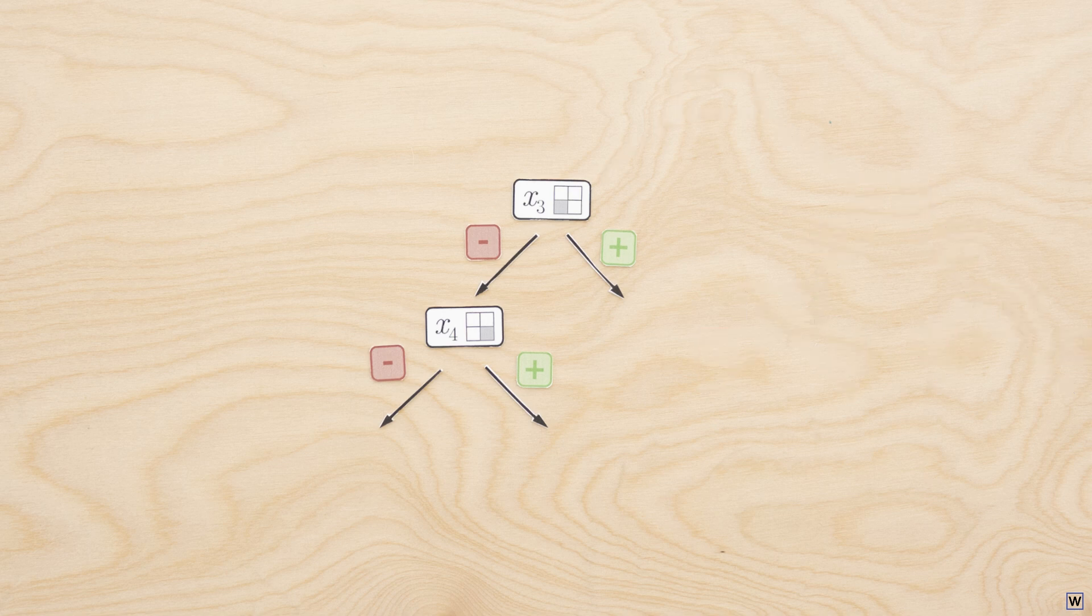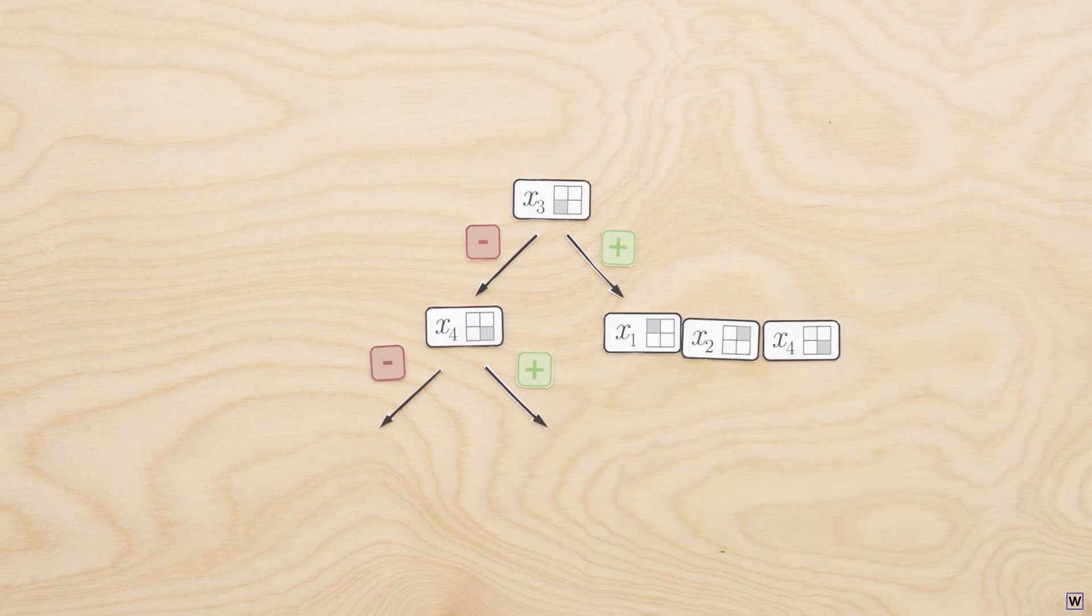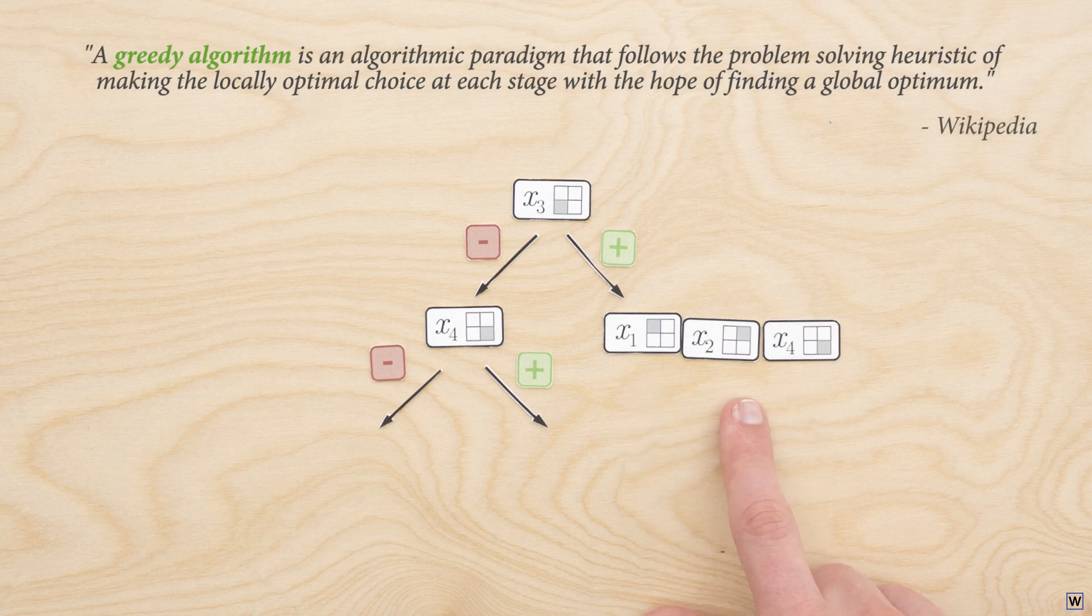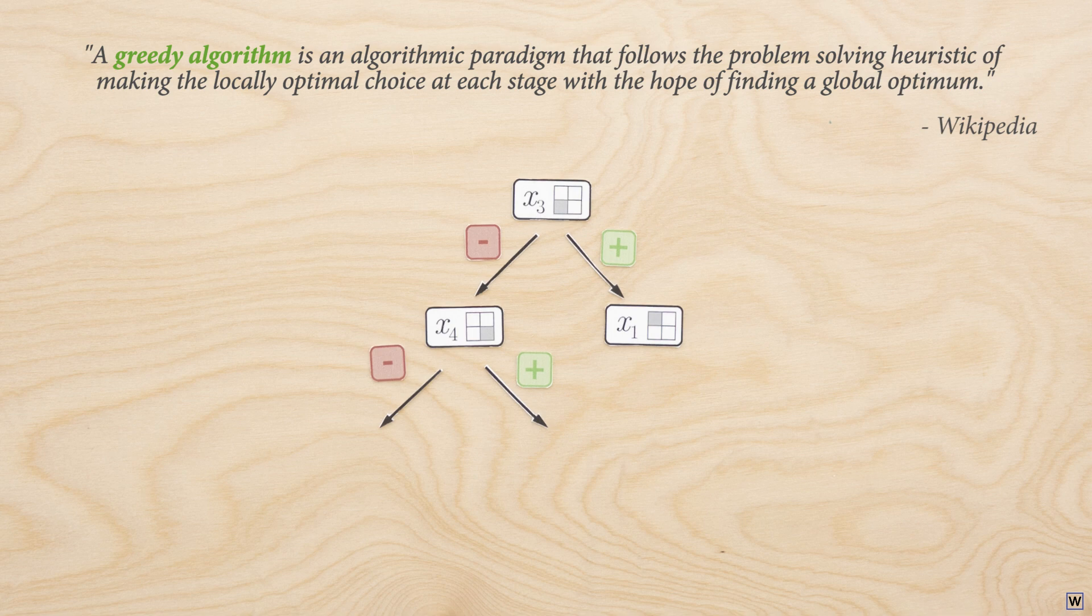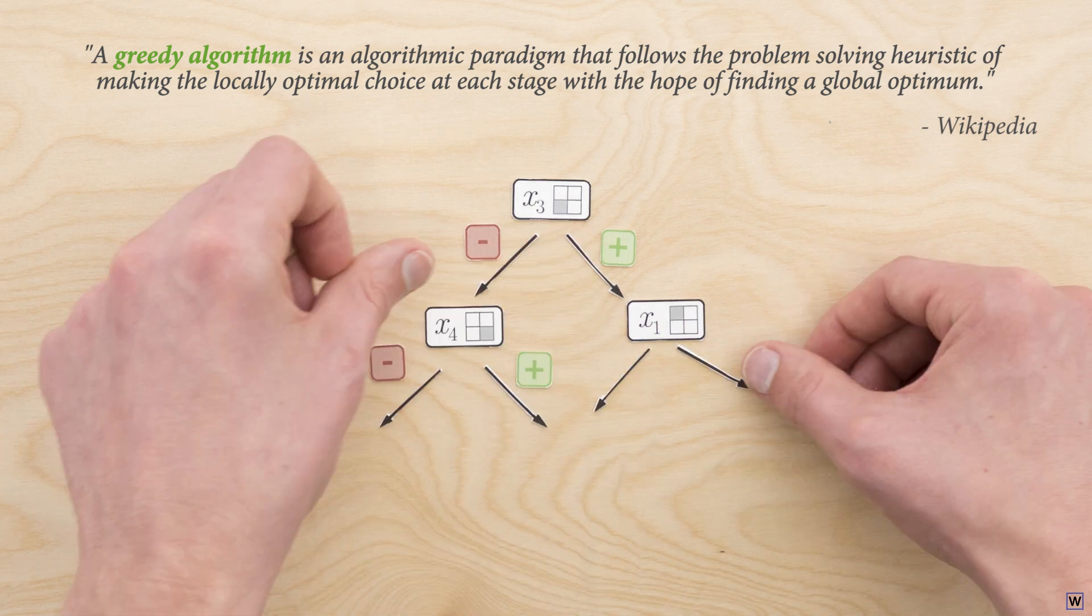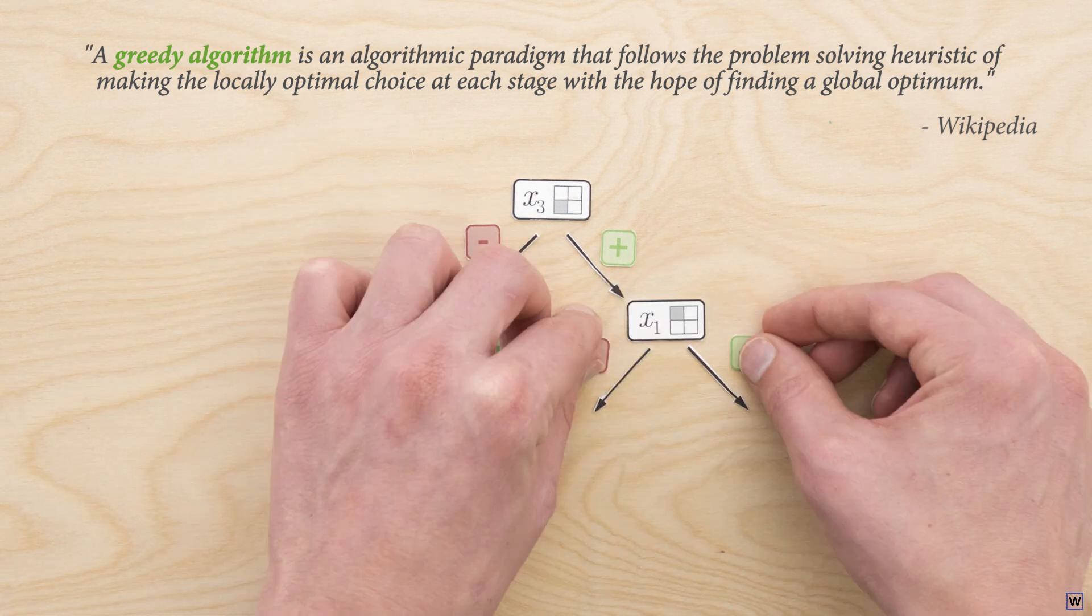However, when implemented correctly, this method, generally called a greedy approach because at each level of our tree, it chooses one option that appears the best and never goes back to reconsider its decision, performs surprisingly well across a huge number of problems, including ours.